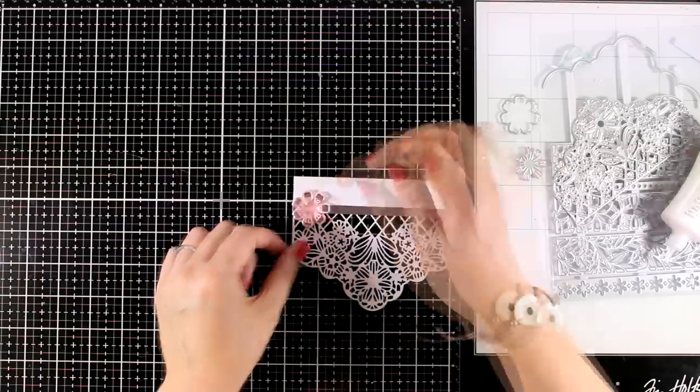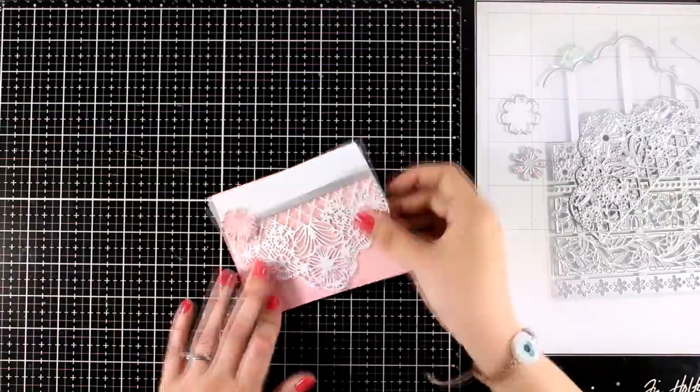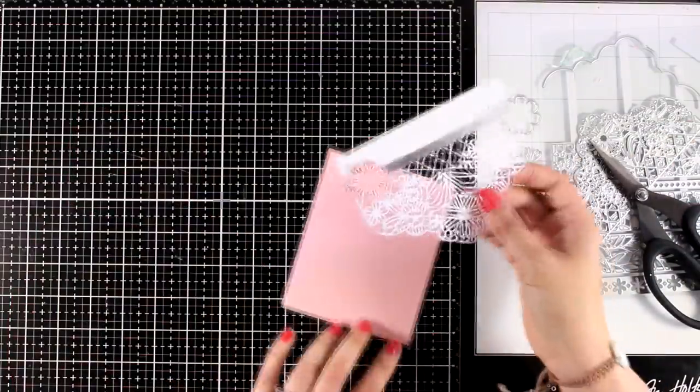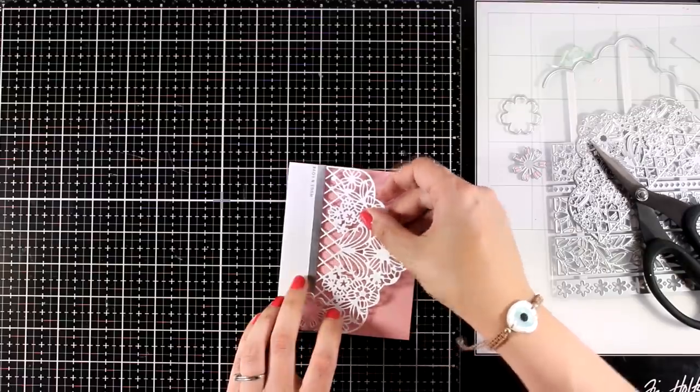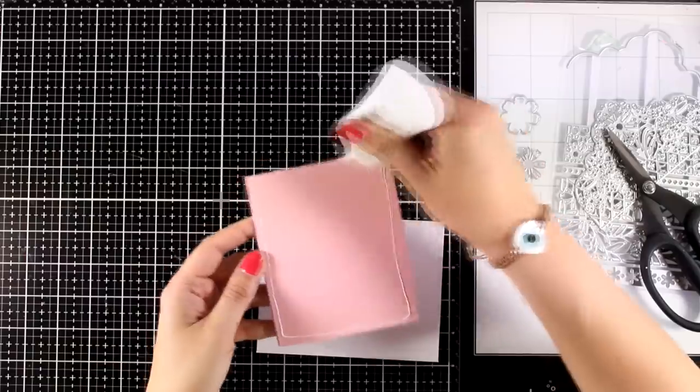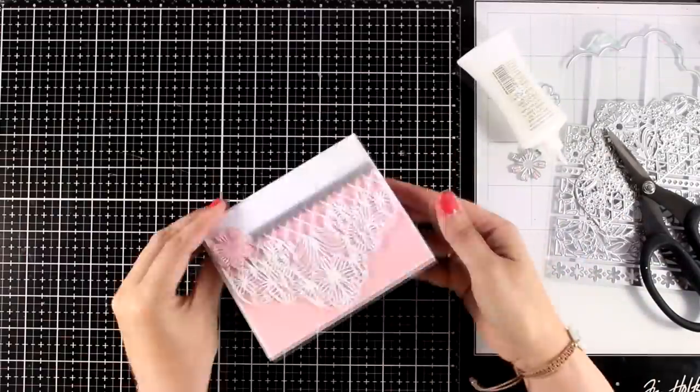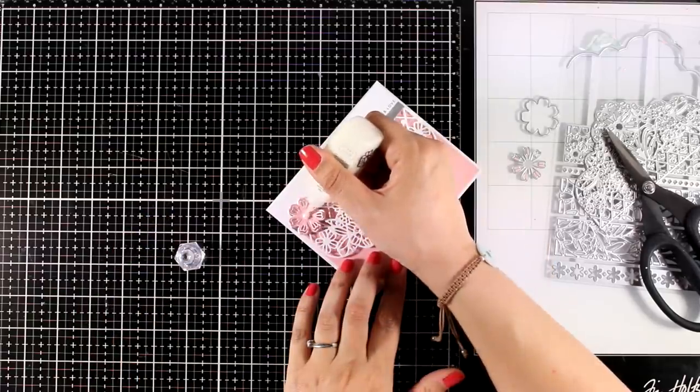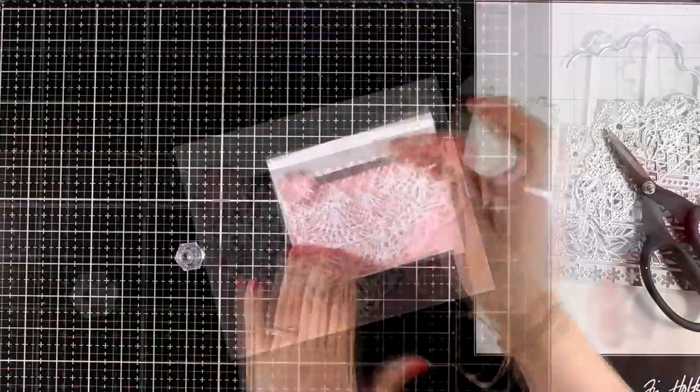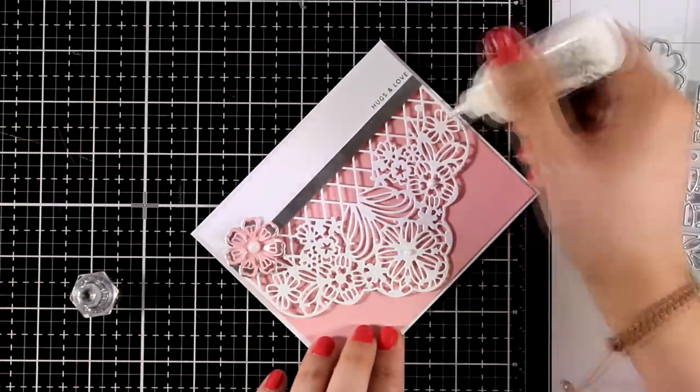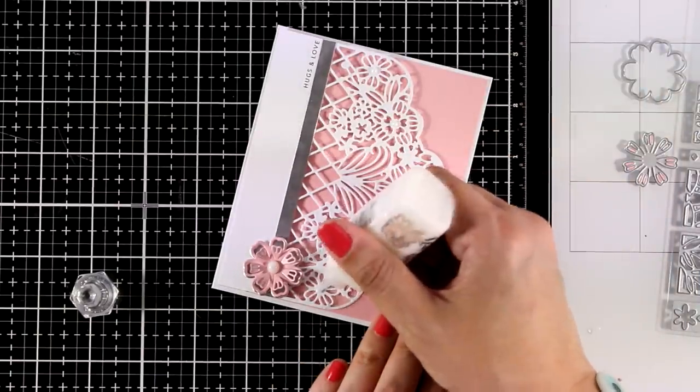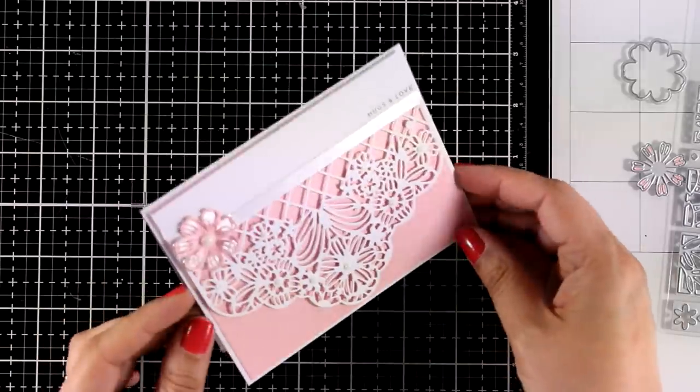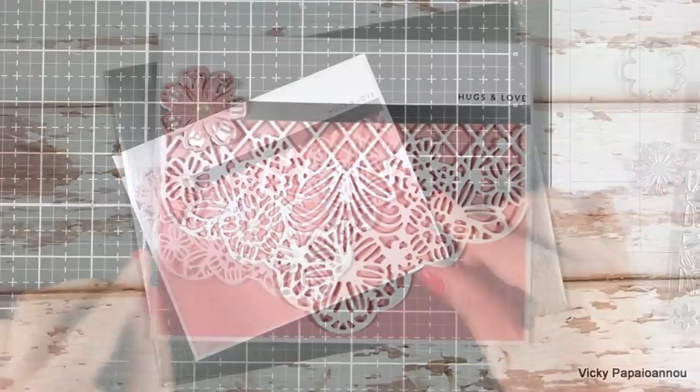I went ahead and stamped the sentiment on the right that says 'hugs and love' just over the silver strip. At the back, I'm going to add some dimension—this is the same pink cardstock that I used for cutting out the flower so everything matches perfectly. Finally, I'm going to stick the whole panel on top of a standard card that's four and a quarter by five and a half, leaving a small border all around. You can embellish your card even more with gems. I'm going with Nuvo Dream Drops in Cloud Nine—it has a lovely iridescent finish that matches pretty much every project. Here's a look at the first card for today—really elegant, absolutely gorgeous.